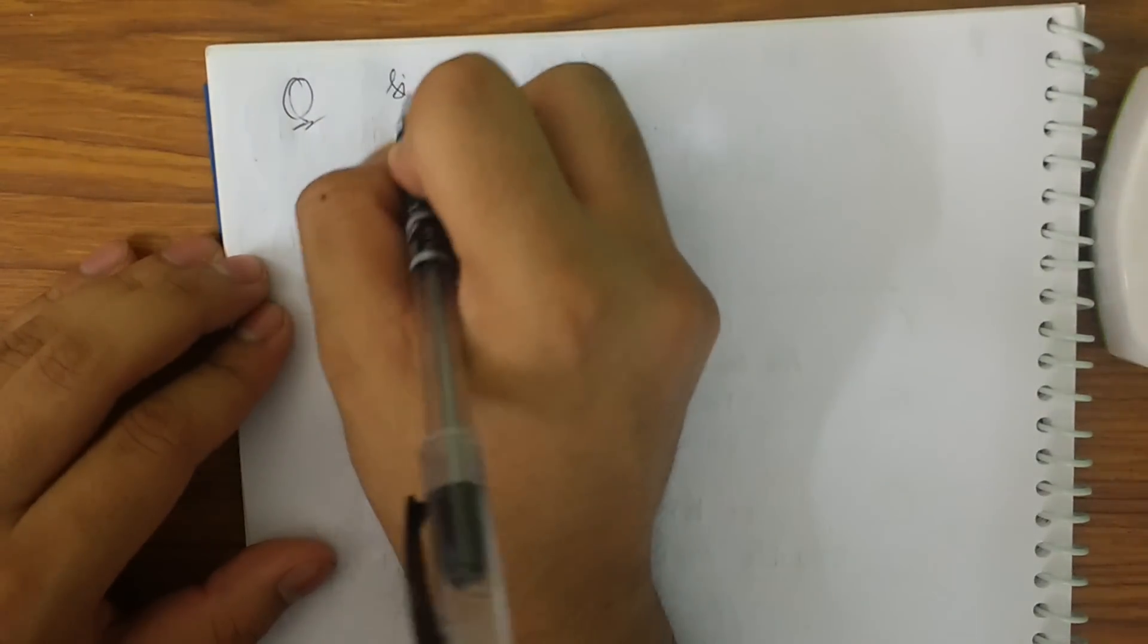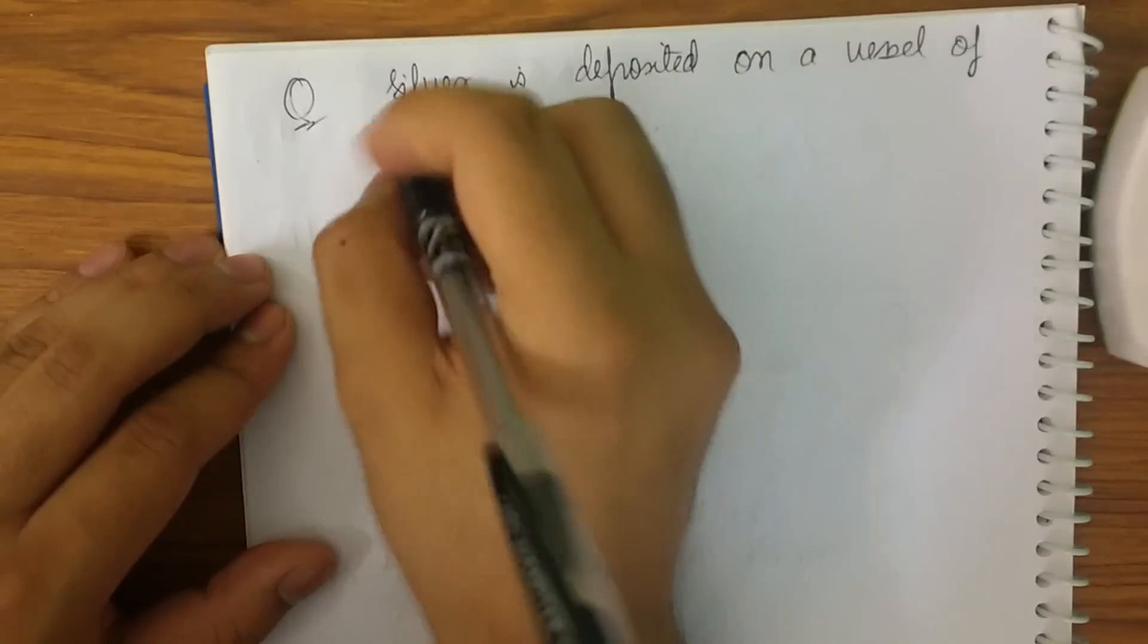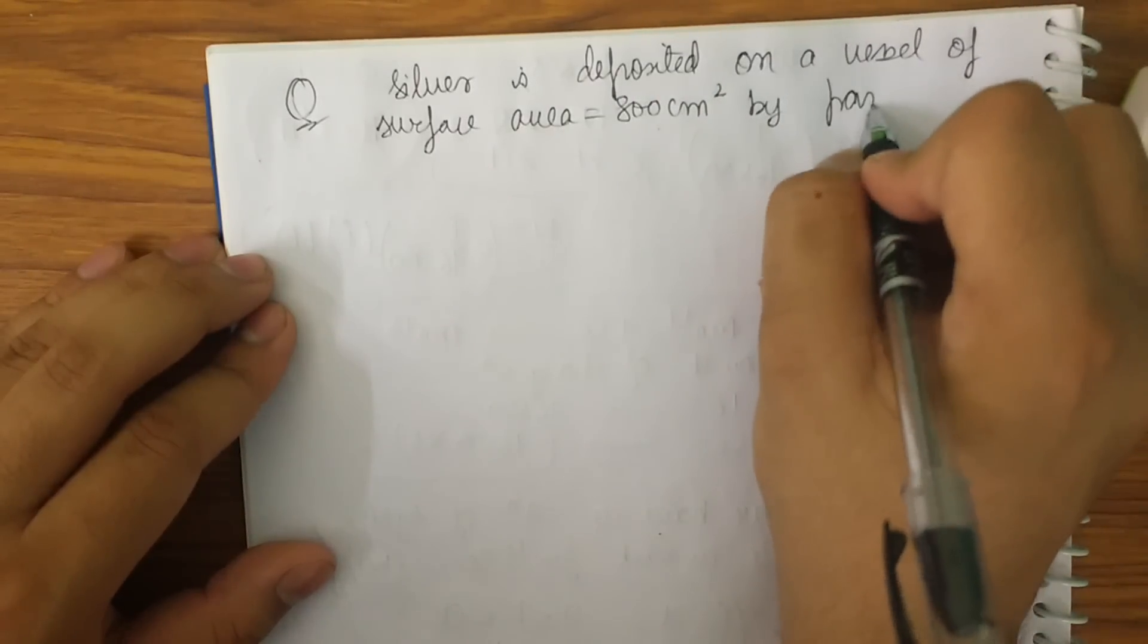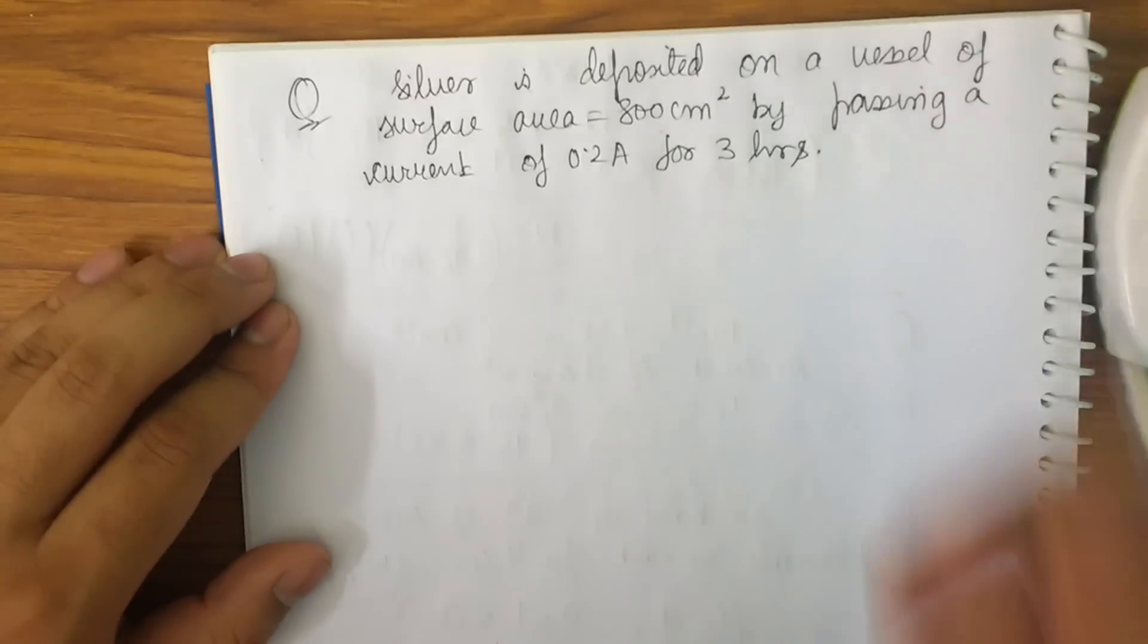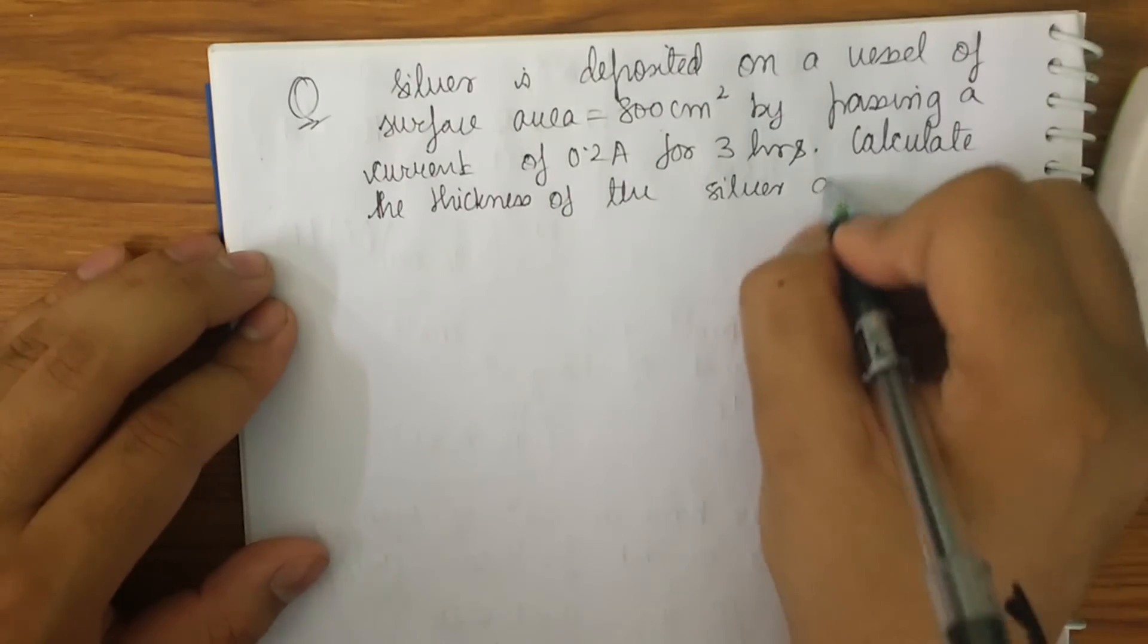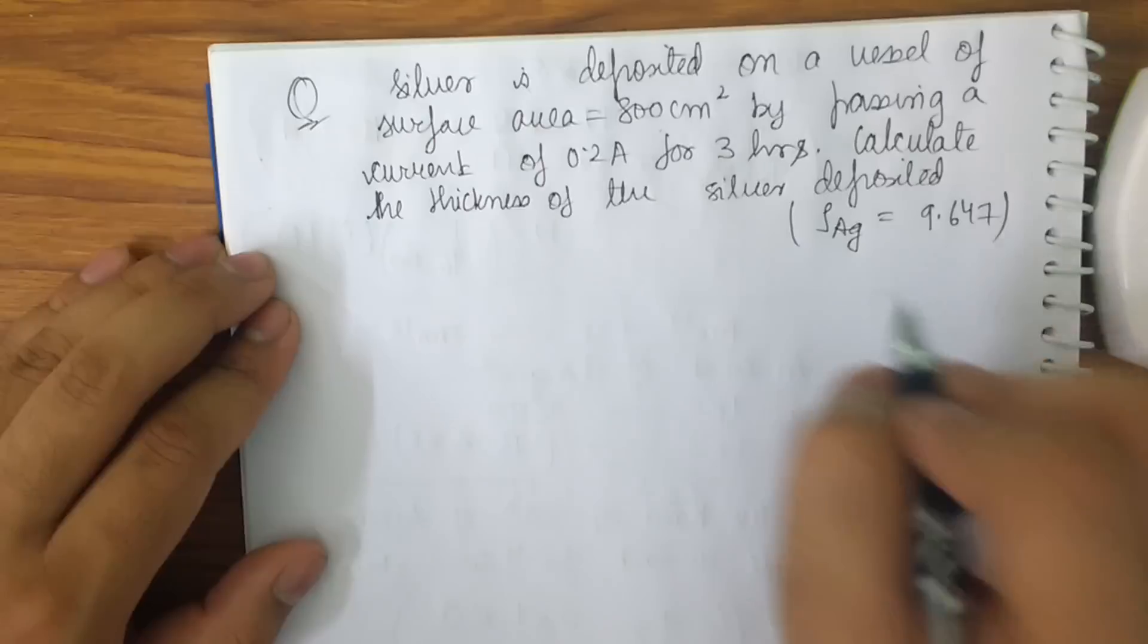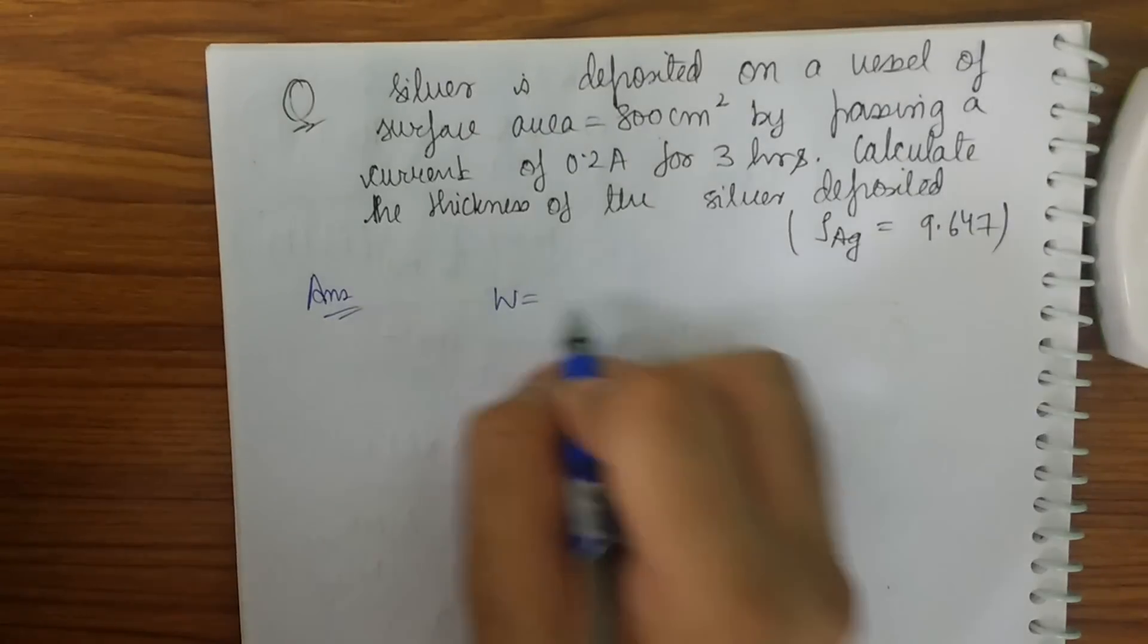Let me discuss one more question about Faraday's law of electrolysis here. The question is silver is deposited on a vessel, on a container or on a vessel of surface area. The surface area is given to be 800 centimeter square by passing a current of 0.2 amperes for 3 hours. Now you can see that we are not getting any integrating value here. So this question can be directly solved. So the question that is asked is to calculate the thickness of the silver deposited, silver deposited given that the density of silver is 9.647.